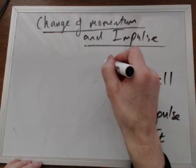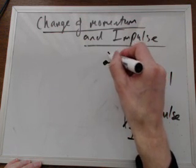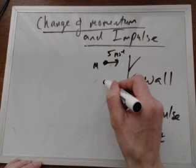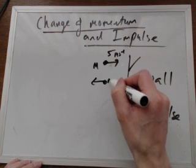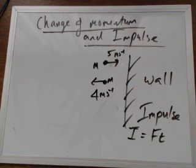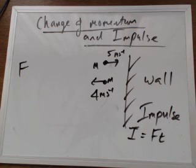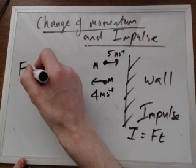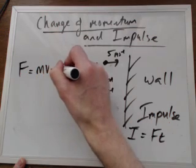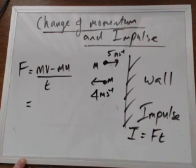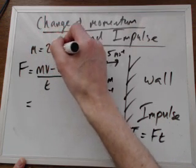It comes in at 5 metres per second with mass m. It returns, mass m, at 4 metres per second — the mass stays the same. The average force that the ball will feel, and also the wall will feel due to Newton's third law, is going to be mv minus mu divided by time. Let's say mass equals 2 kilograms.